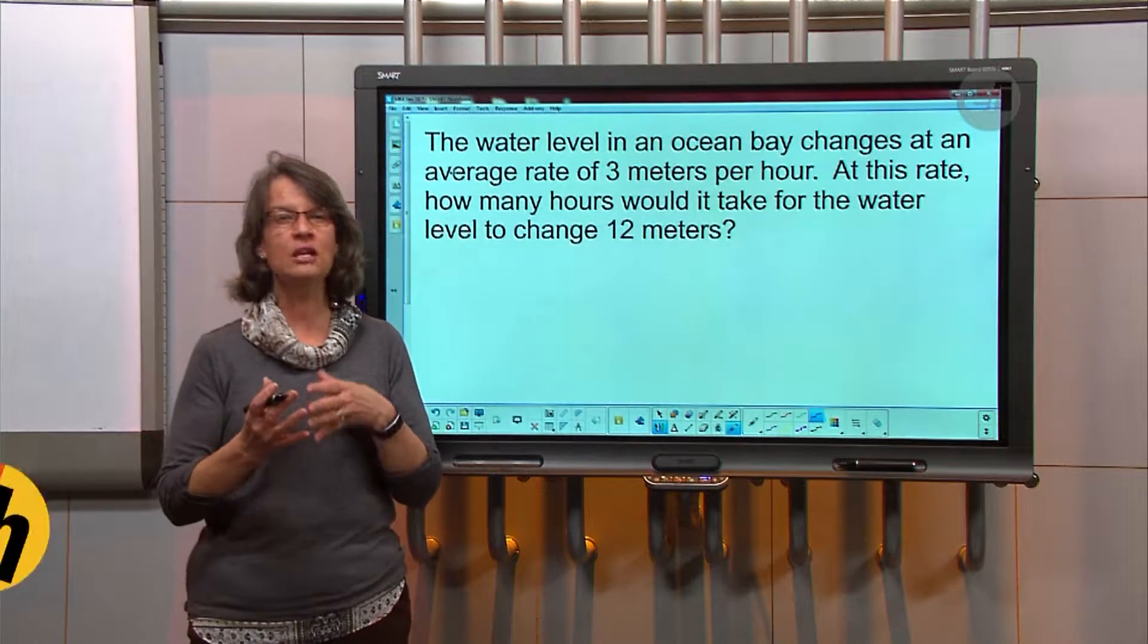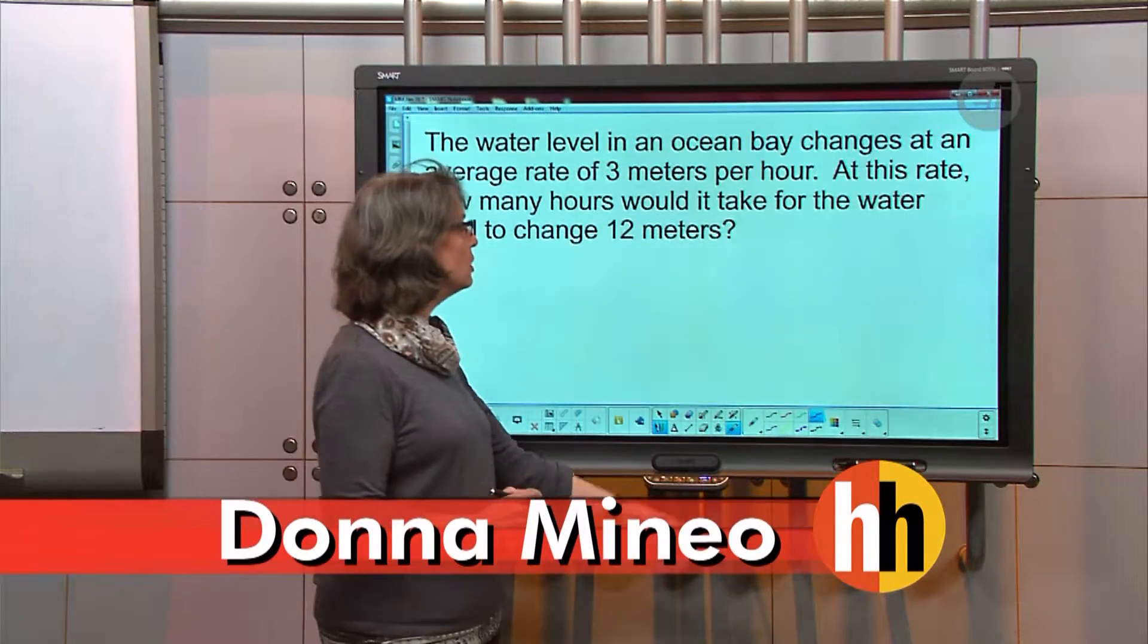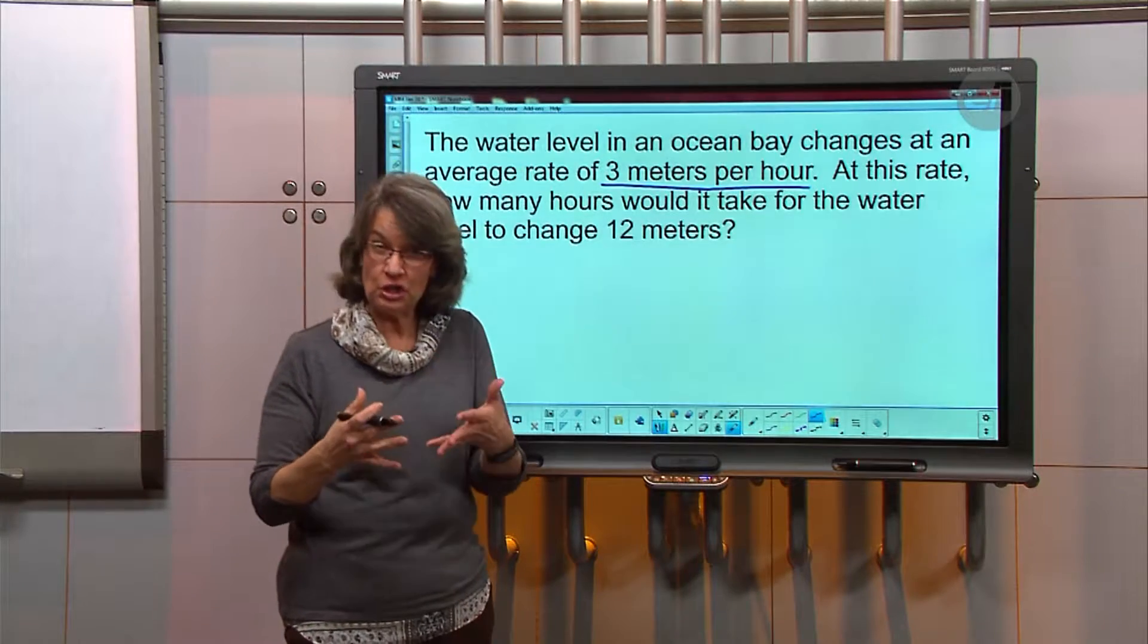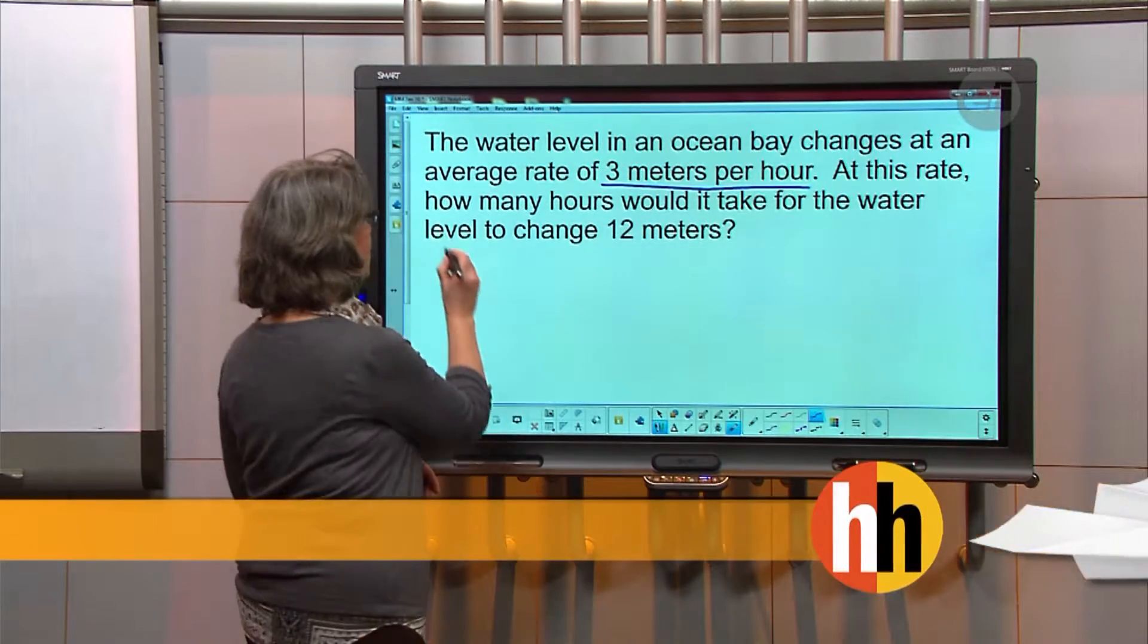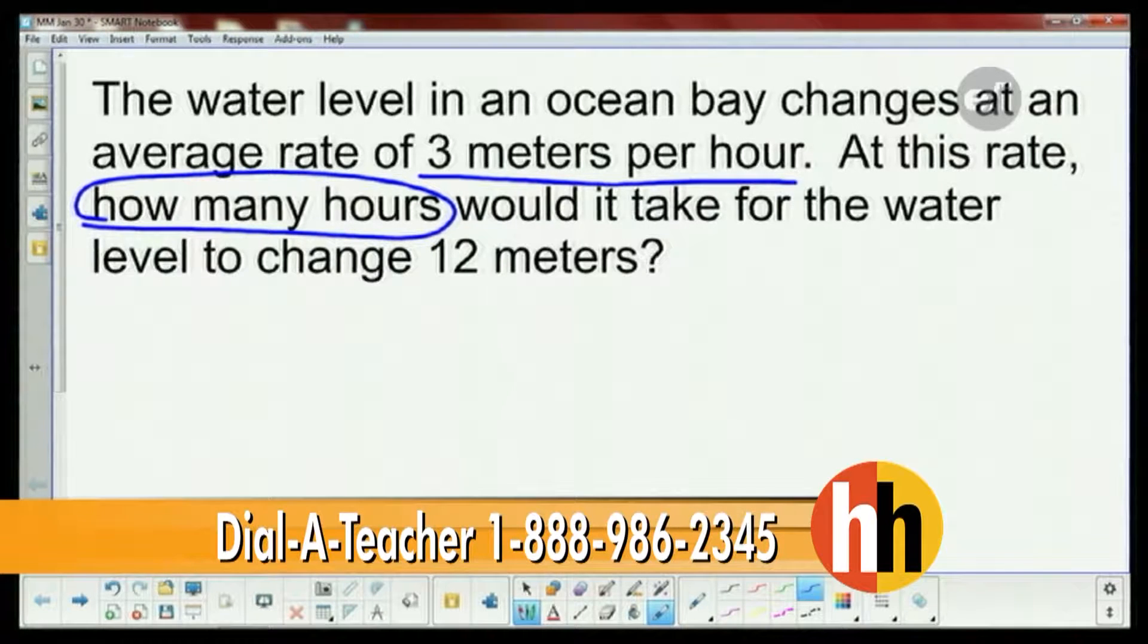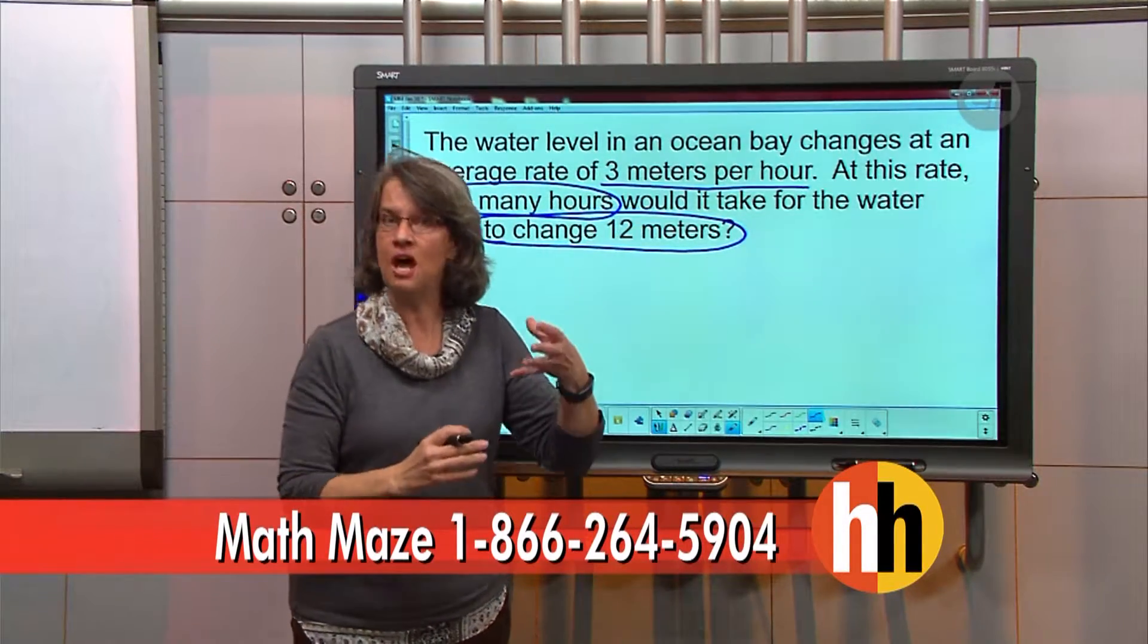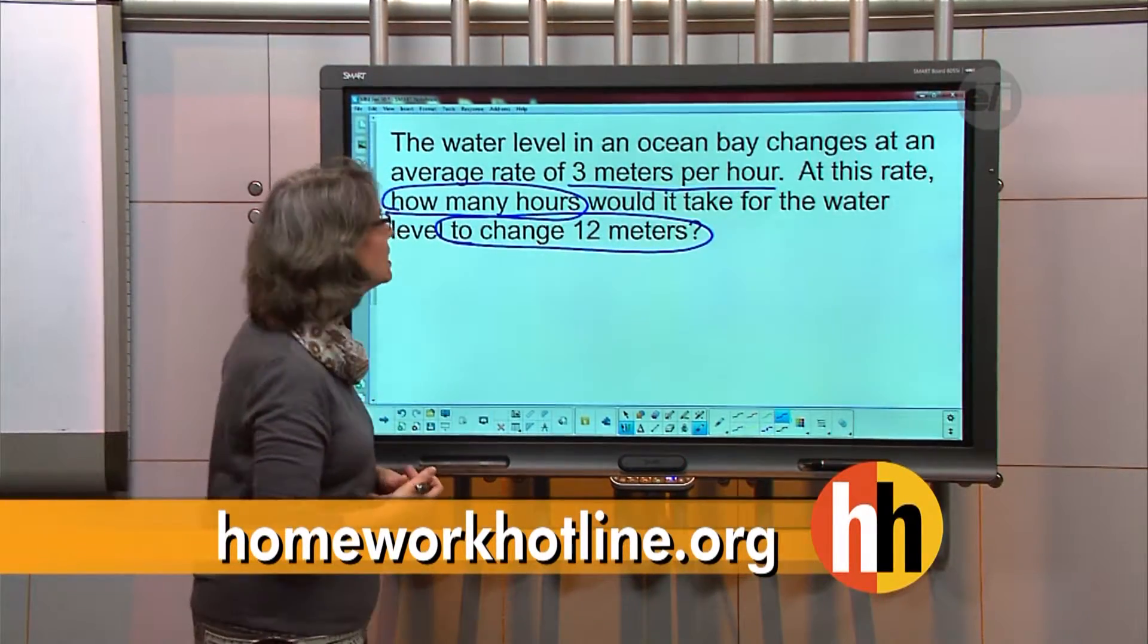All right, so the first thing you want to do is figure out what you need and what you know. So we're going to go in here and underline. We know 3 meters per hour. Now I always tell my students to circle or highlight what you're trying to find, and it says how many, so I'm going to circle how many hours to change 12 meters. You don't have to highlight the whole question, only little pieces of it just enough to make sure when you get your answer you're actually answering the question.